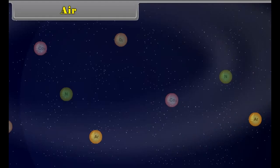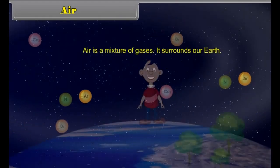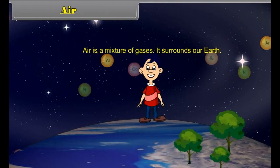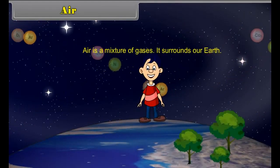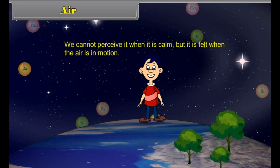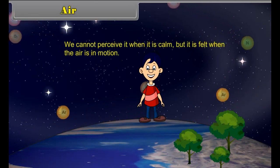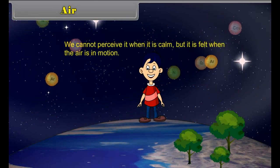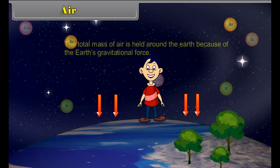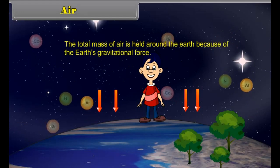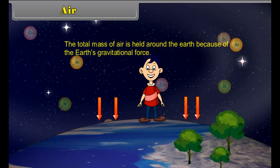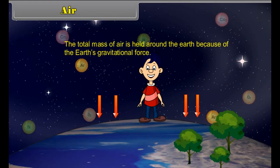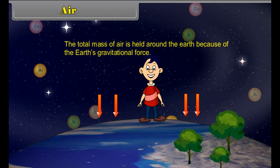Air is a mixture of gases. It surrounds our earth. We cannot perceive it when it is calm, but it is felt when the air is in motion. The total mass of air is held around the earth because of the earth's gravitational force.